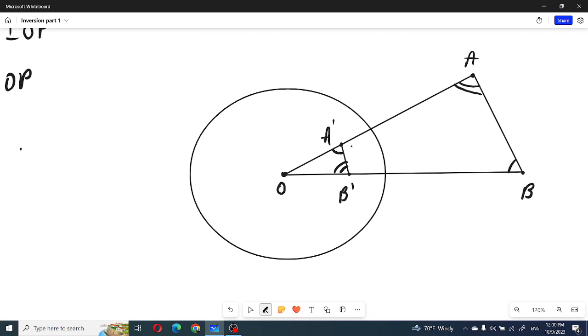Then we need to show that angle O A prime B prime must be equal to angle OBA. To show this we will need to use the power of point. OA prime times OA equals R square, and this equals OB prime times OB.